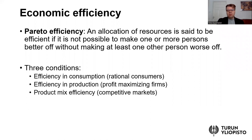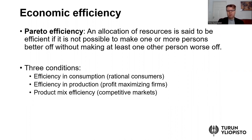A central concept that we will consider is Pareto efficiency. We look at economic efficiency from this Pareto perspective, focusing on allocation of resources and also allocation of outputs and utility between different individuals. We say that an allocation is Pareto efficient if it is not possible to make one or more persons better off without making at least one other person worse off. That is a relatively general definition of economic efficiency, but it implies three distinct conditions.